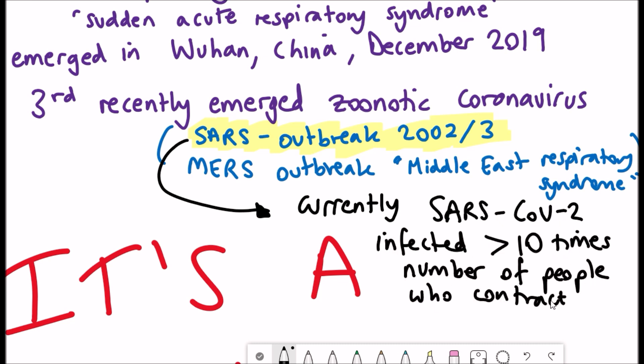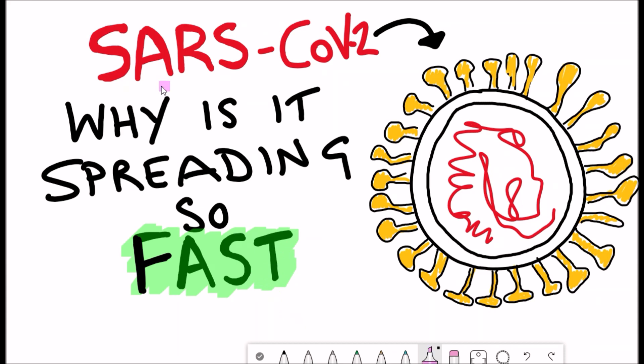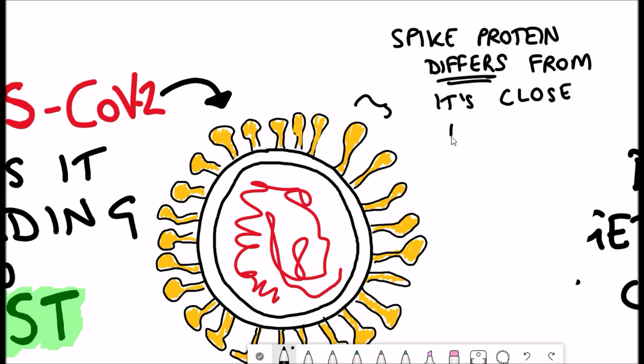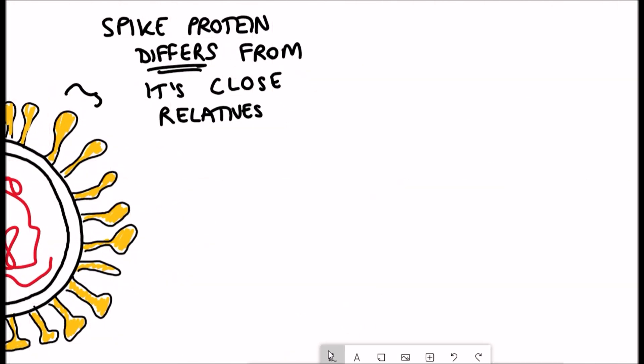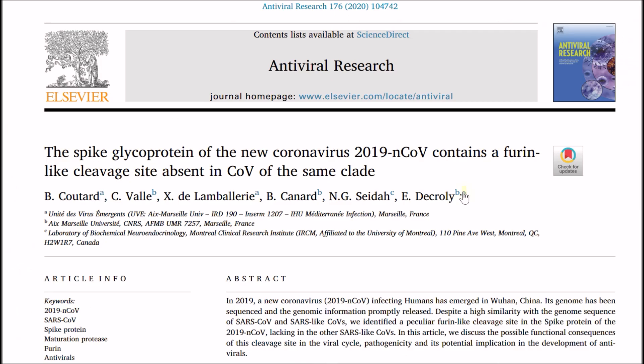So what we've unfortunately witnessed is a rapid spread of this novel coronavirus outbreak. But the key question is why? Why is it spreading so fast? And if we can understand why it's spreading so fast, that's another potential target to prevent transmission. And so what we've learned from the genome sequence of the novel coronavirus is that the spike protein differs from its close relatives, and what this means is the biochemistry is different.